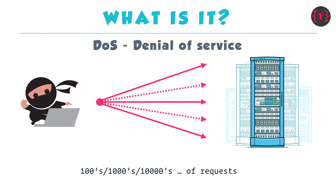Similarly, a brute force attack is a related kind of attack. Suppose you have a login route where the user enters their email and password. If an attacker wants to log in to your application and impersonate someone, they will try combinations of emails and passwords from a dictionary and make hundreds and thousands of requests to your login route until one succeeds. Therefore, you need to limit the number of requests allowed per minute or per hour.